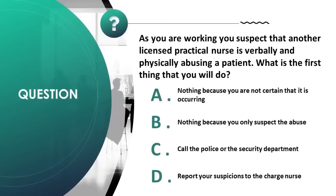You suspect that another licensed practical nurse is verbally and physically abusing a patient. What is the first thing you will do? A) nothing because you are not certain, B) nothing because you only suspect the abuse, C) call the police or security department, D) report your suspicions to the charge nurse.